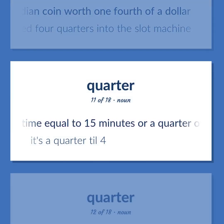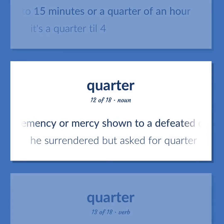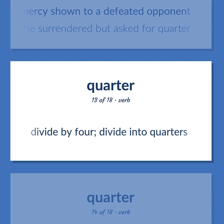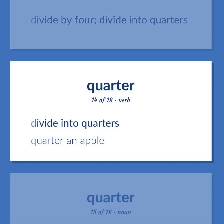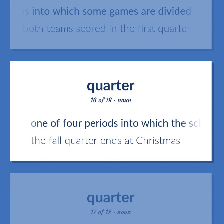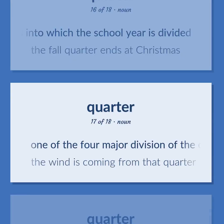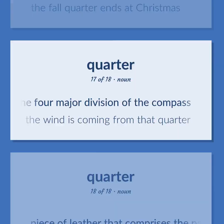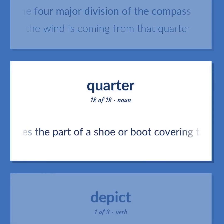A unit of time equal to fifteen minutes or a quarter of an hour. It's a quarter till four. Clemency or mercy shown to a defeated opponent. He surrendered but asked for quarter. Divide by four — divide into quarters. Quarter an apple. Football and professional basketball: one of four divisions into which some games are divided. Both teams scored in the first quarter. One of four periods into which the school year is divided. The fall quarter ends at Christmas. One of the four major divisions of the compass. The wind is coming from that quarter. Piece of leather covering the heel and joining the vamp.